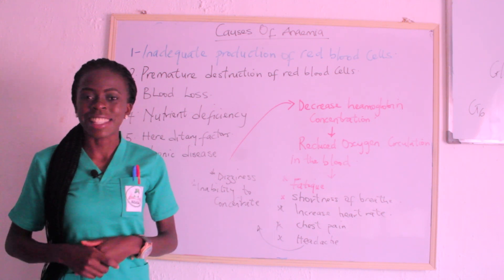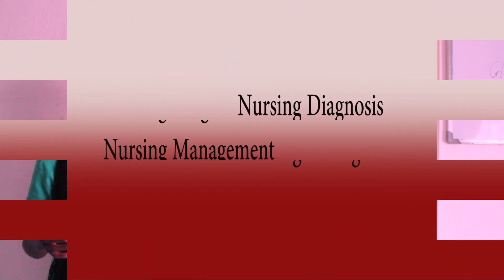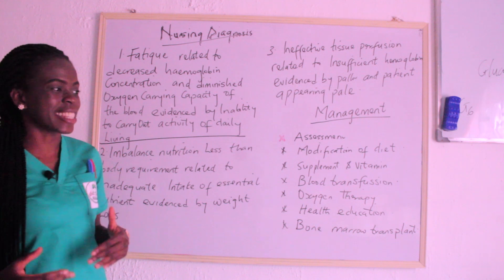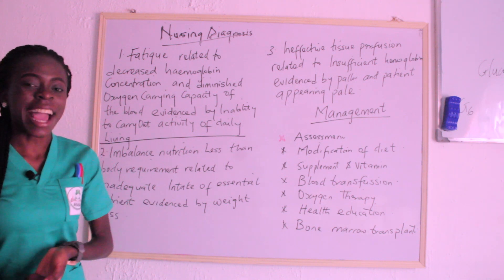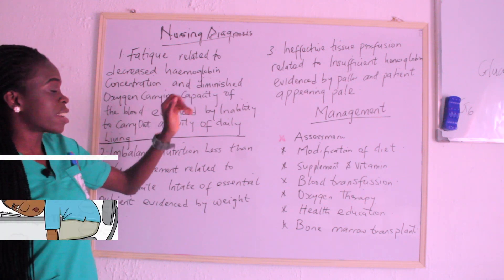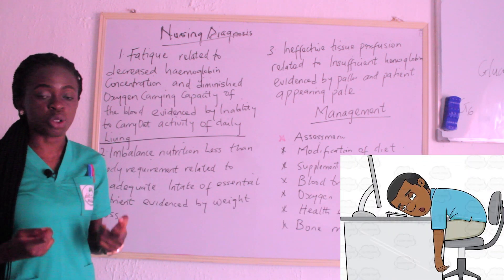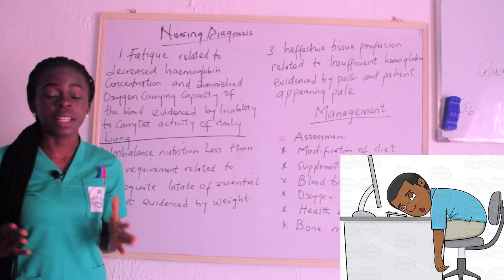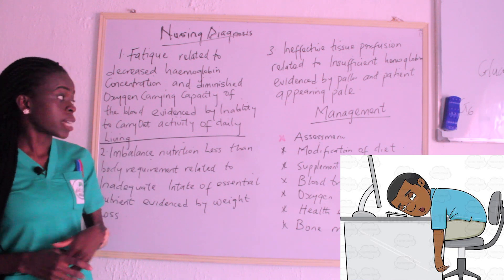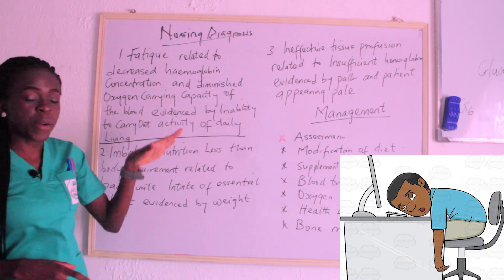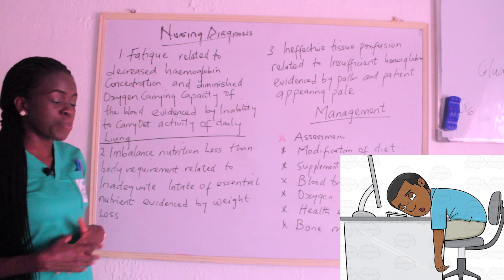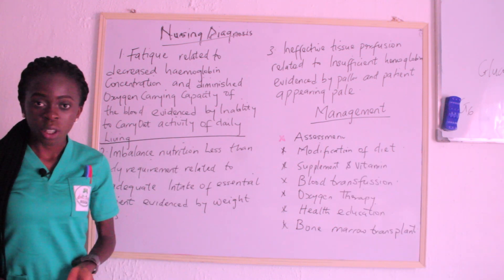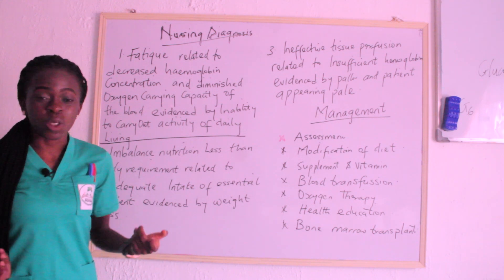Next, we are going to be talking about the nursing diagnosis — our roles and responsibilities. The first nursing diagnosis for anemia is fatigue related to decreased hemoglobin concentration, evidenced by inability of the patient to carry out activities of daily living. Fatigue can also be related to diminished oxygen-carrying capacity, evidenced by inability of the patient to carry out activities of daily living. When hemoglobin is reduced, fatigue is definitely going to take place.